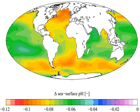Dissolving CO2 in seawater increases the hydrogen ion concentration in the ocean, and thus decreases ocean pH, as follows: CO2 + H2O → H2CO3 → HCO3− + H+ → CO3²− + 2H+.